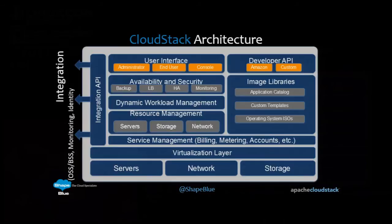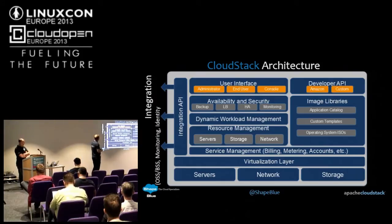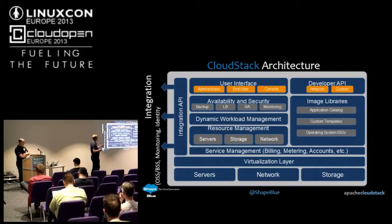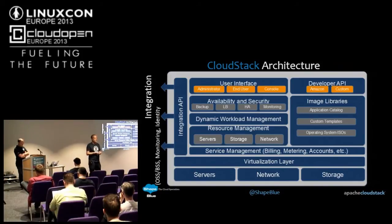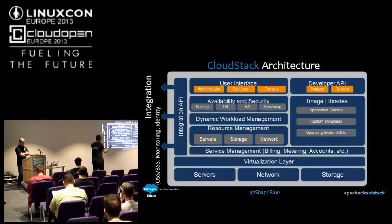In terms of the architecture — we have a user interface at the top with the API. We manage things like backup, load balancing, and HA. We manage resources in terms of network, storage, and compute. We do a piece around managing image libraries of machine templates — if you're involved with OpenStack, that's Glance, but we have that integral to our product. We then manage the hypervisor underneath and have various integration points at the side.